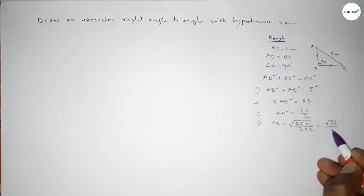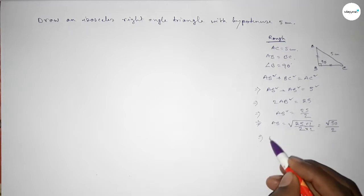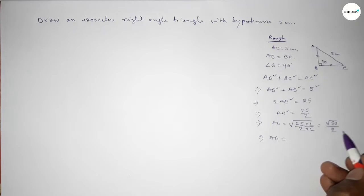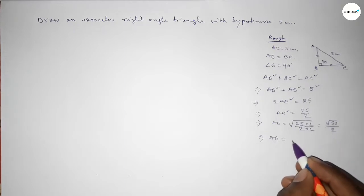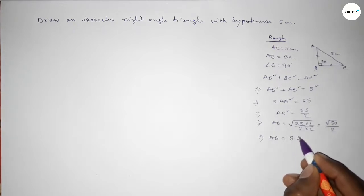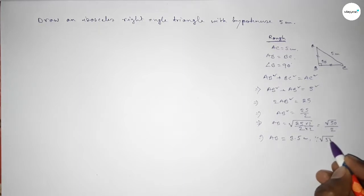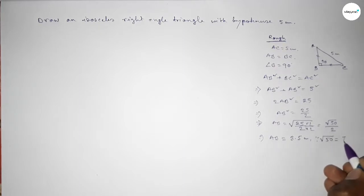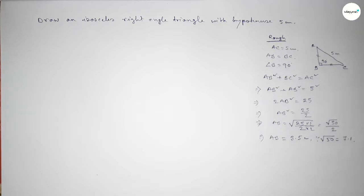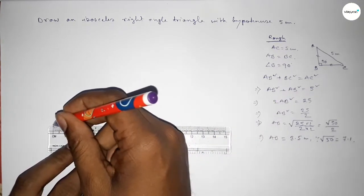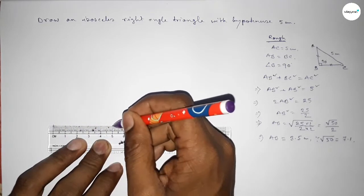This gives AB = √50 / 2, which is approximately 3.5 centimeters. Also, √50 is approximately 7.1 centimeters. Now we have to draw a line of length 5 centimeters first.